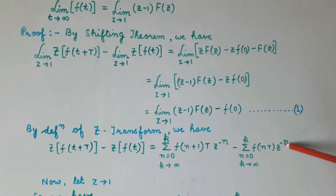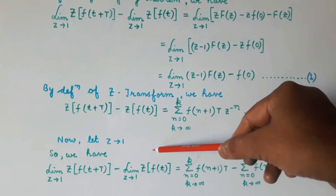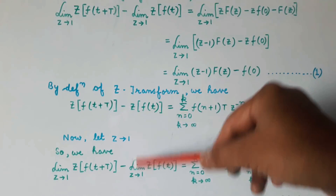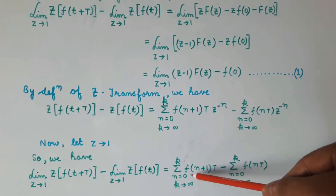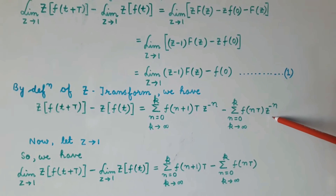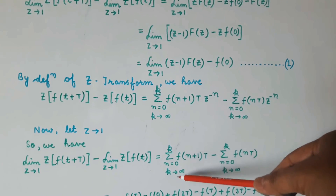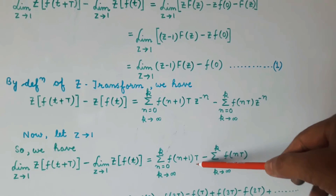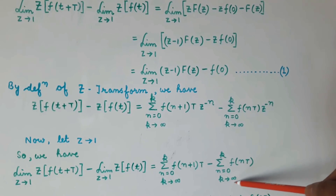Now let z tend to 1. Substituting z equals 1 into these two equations, the expression becomes the summation from n equals 0 to k, as k tends to infinity, of f(n+1)·T minus the summation from n equals 0 to k of f(n·T), when k tends to infinity.